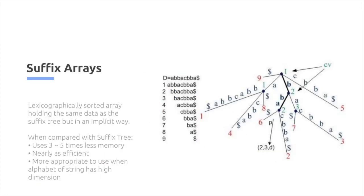Similarly, suffix arrays are another optimization, which compared to suffix trees use three to five times less memory, they're nearly as efficient, and they're more appropriate to use when the alphabet size is high dimension. This uses lexicographically sorted arrays holding the same data as the suffix tree, but in an implicit way.